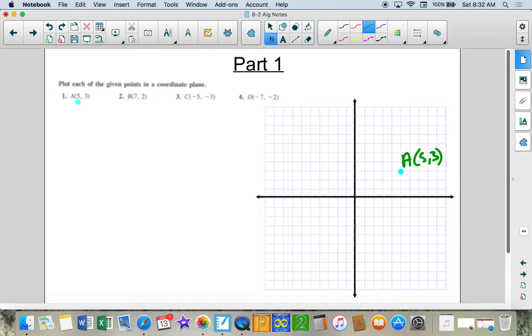The point 7, 2. So you're going to go 7 on the x. 1, 2, 3, 4, 5, 6, 7. 2 on the y. That would get me there. And I would label the point B. 7, 2. We don't have to necessarily do that in this equation or in this example.